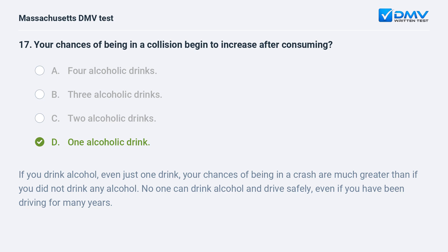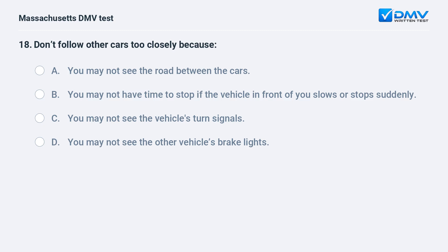Don't follow other cars too closely because: a. you may not see the road between the cars. b. you may not have time to stop if the vehicle in front of you slows or stops suddenly. c. you may not see the vehicle's turn signals. d. you may not see the other vehicle's brake lights.